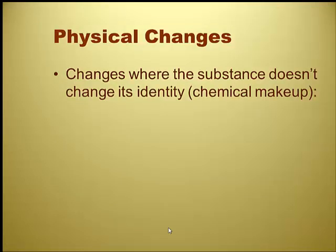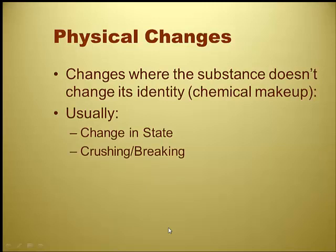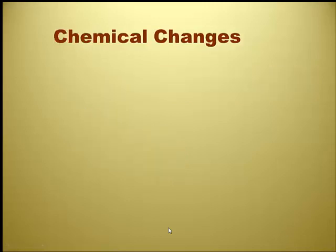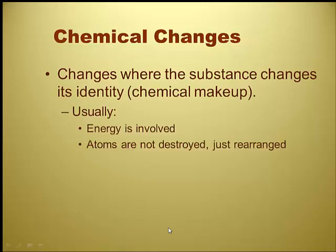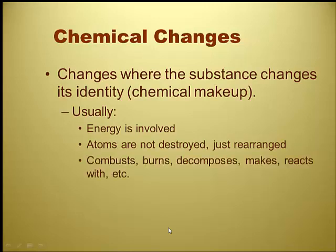A physical change is a change where the substance doesn't change its identity or chemical makeup — it's still the same thing. Usually we're looking for things like a change in states, crushing, breaking, cutting, ripping, melting, or heating up. Chemical changes are changes where the substance will change its actual chemical makeup. Usually energy is involved. Atoms are not destroyed, just rearranged to make a different chemical substance. Words to look for when deciding if it's a chemical change: combusts, burns, decomposes into, makes or synthesizes, reacted with, produces — words that say it's changing.